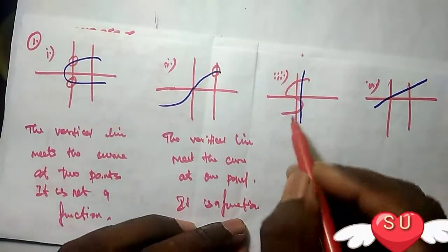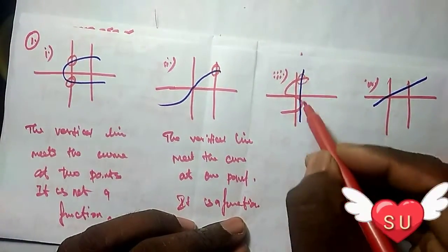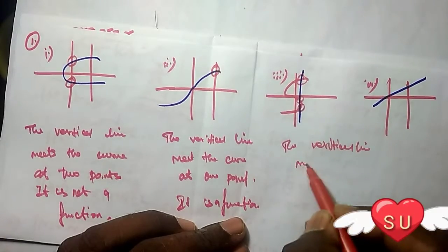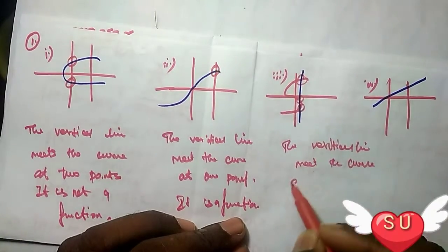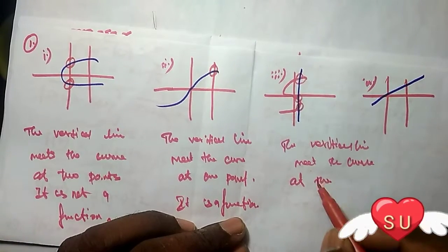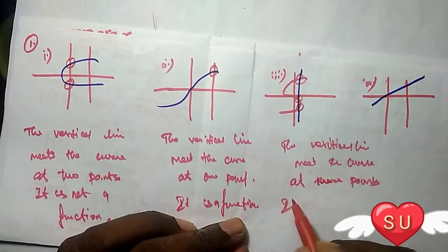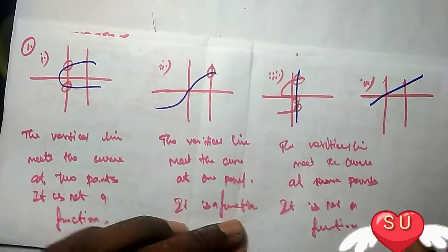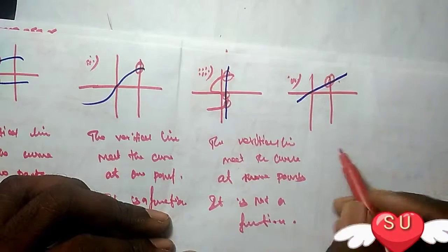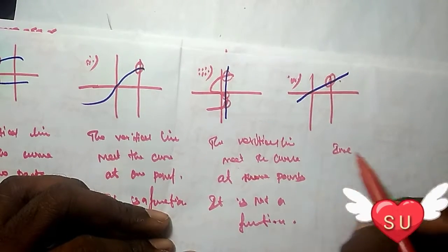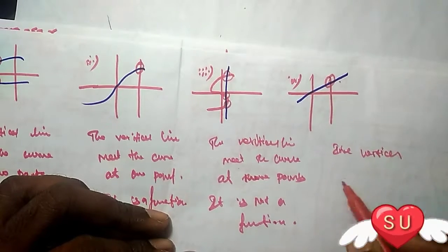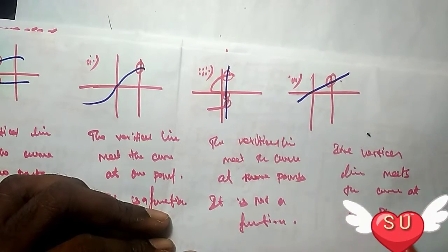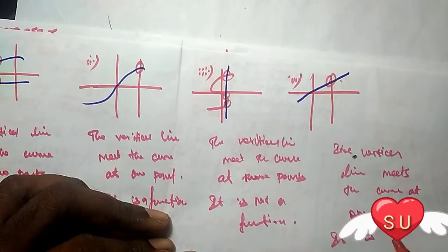So for graph (iv), the vertical line meets the curve at three points or more points. When the vertical line meets the curve at three or more points, it is not a function. It is not a function. When the vertical line meets the curve at one point, it is a function.